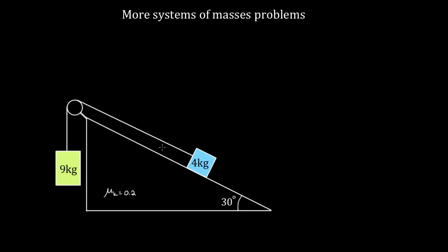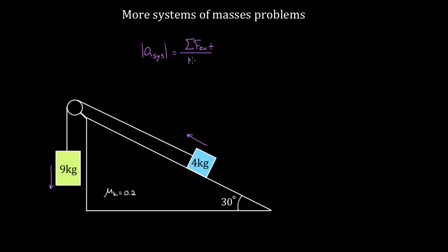If you tried to solve this the hard way, it'd be challenging — you're gonna have multiple equations with multiple unknowns if you try to analyze each box separately using Newton's second law. But because these boxes have to accelerate at the same magnitude of acceleration, we're just gonna be able to find the system's acceleration. This four kilogram mass is gonna have acceleration one way, and this nine kilogram mass is gonna have acceleration the other way, and because our rope's not gonna break or stretch, these accelerations are gonna have to be the same. So we get to use this trick where we treat these multiple objects as if they were a single mass, and the acceleration only depends on the external forces on that mass, so we only look at external forces and divide by the total mass.